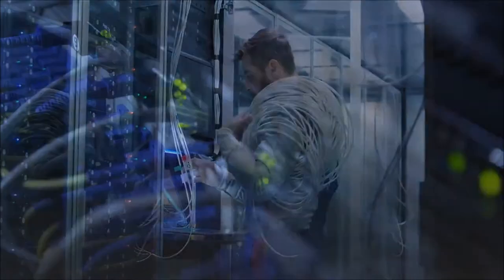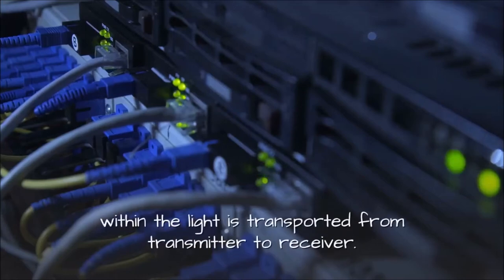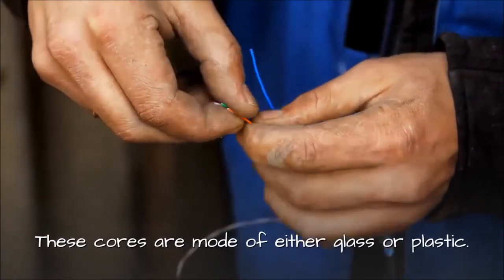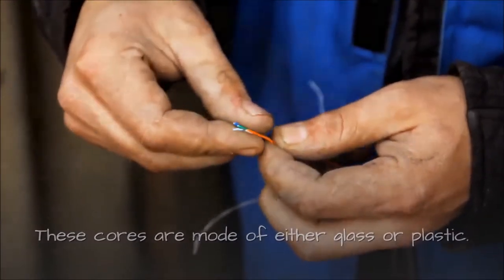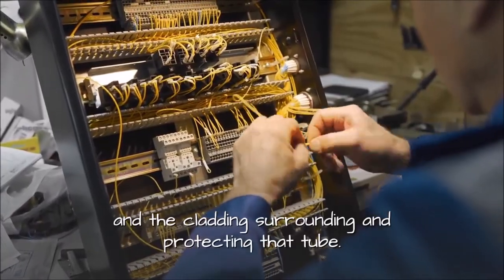All fiber cables are constructed of individual cores with which the light is transported from transmitter to receiver. These cores are made of either glass or plastic. Furthermore, they consist of the actual inner core and the cladding surrounding and protecting that tube.